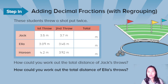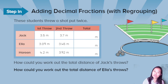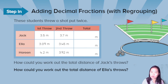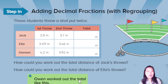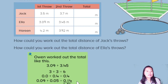How could you work out the total distance for Ella's throw? Ella threw in two rounds — what is the total distance? Distance means ระยะทาง. Now, what is the total value for Ella's two rounds?